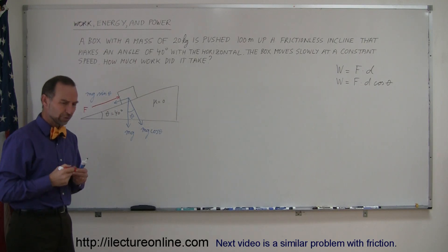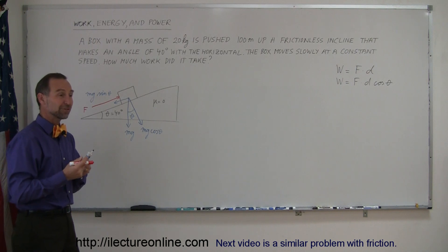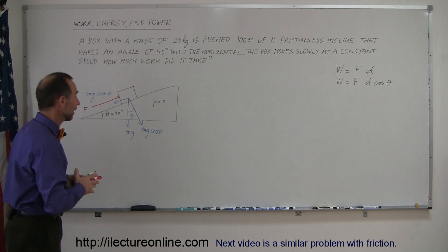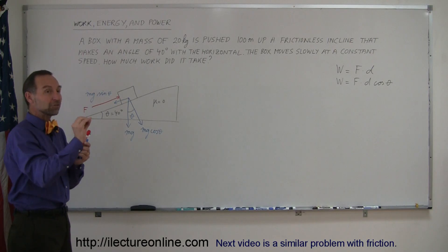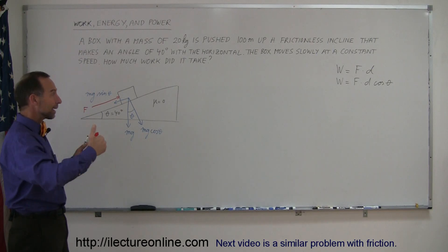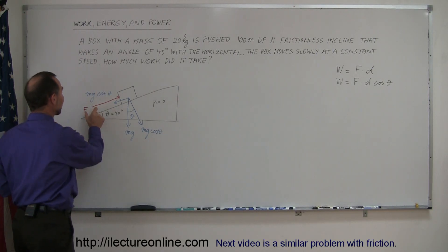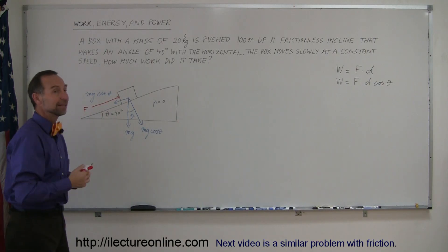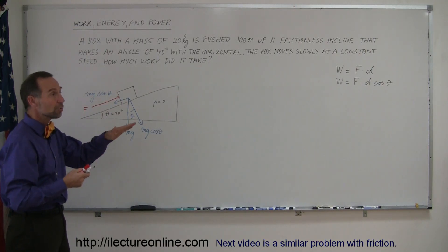You may say, if there's no net force, then how can the box even start to move? That's correct. You need to get it started. But once you add a little extra force to get it started, then you can back off from the force a little bit and make F exactly equal to mg sin θ, and then the box will just continue to move up the hill.